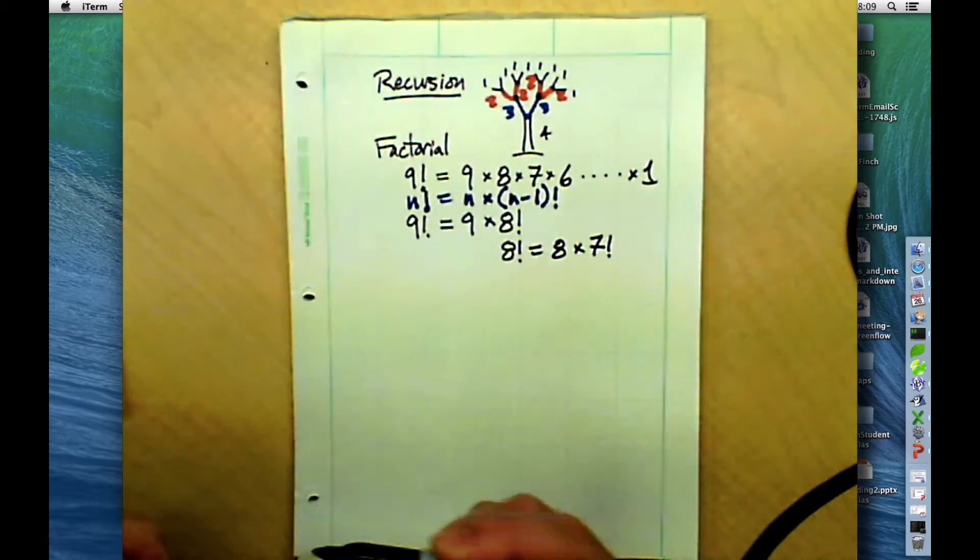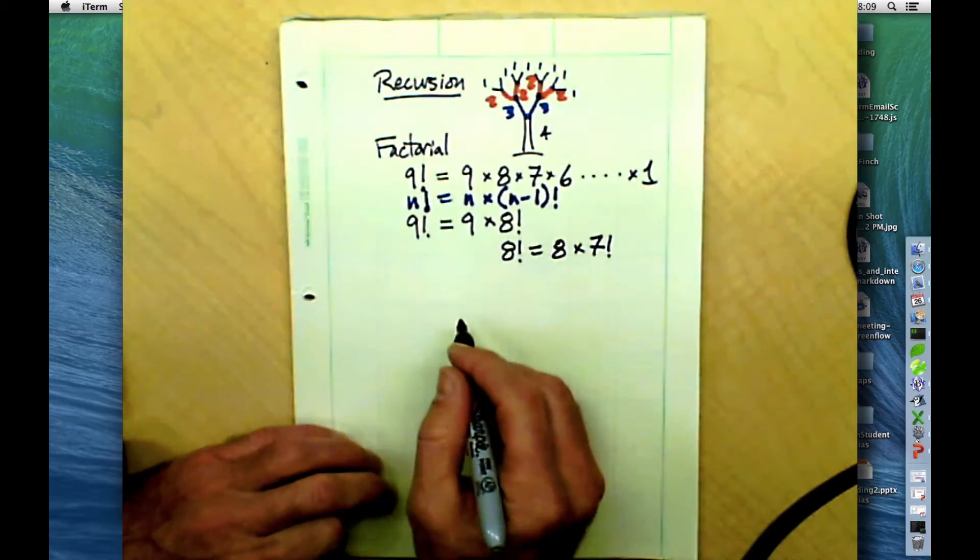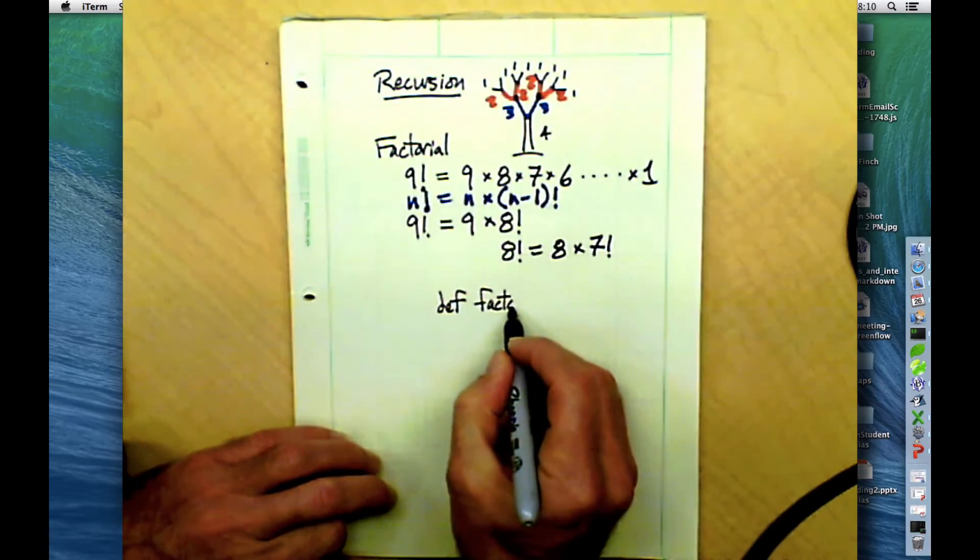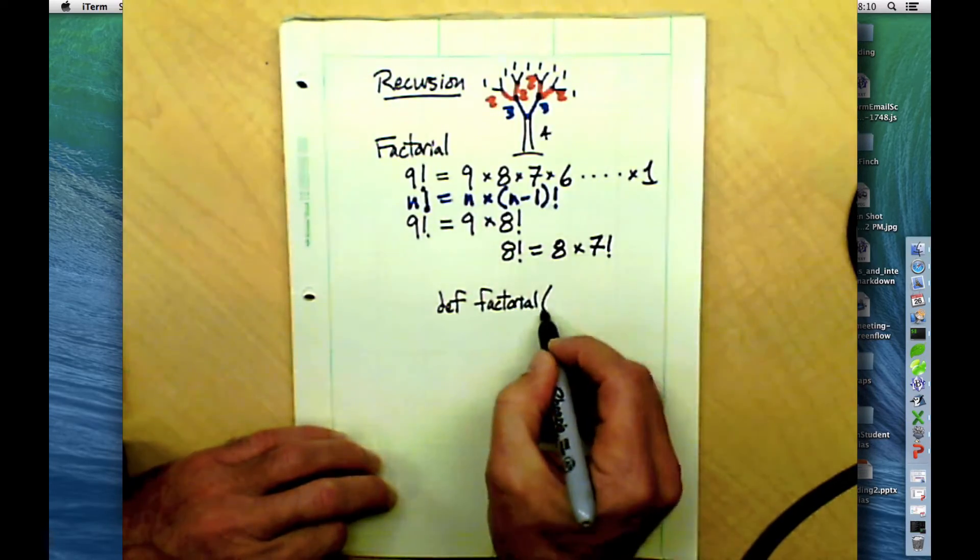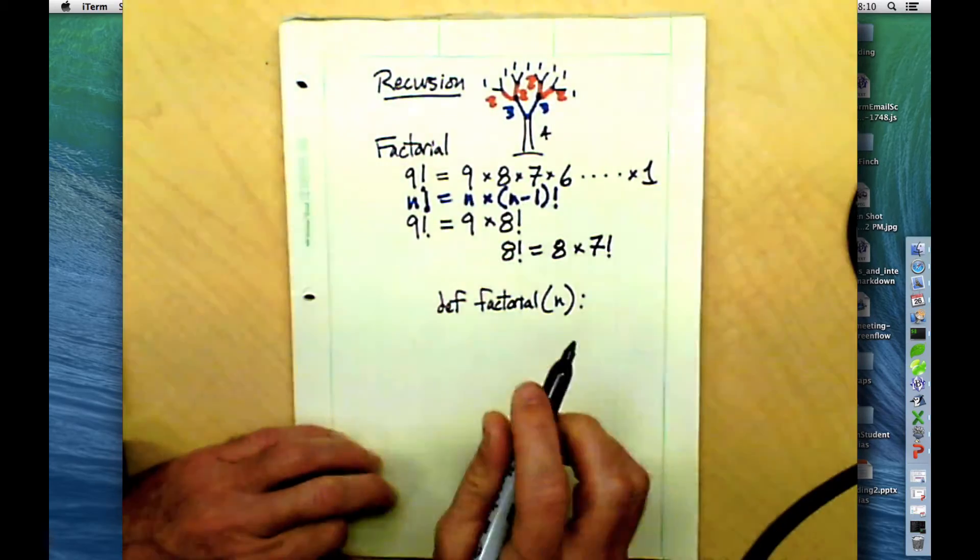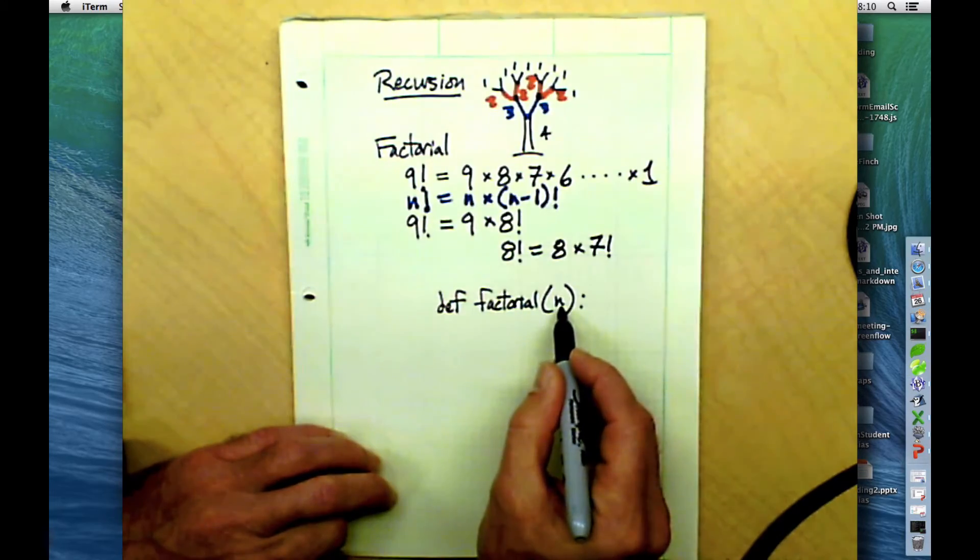We might even write a computer program to calculate factorials for us. I'm going to write a very simple Python program here that will allow us to do that. I'm going to define a function called factorial. I'm going to give the number n. And if you don't know about computer programming, that's fine.